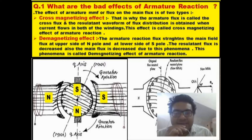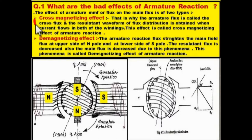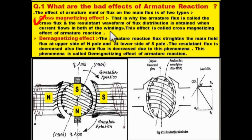The first major effect is the cross-magnetizing effect. What happens is the armature flux and field flux meet at a perpendicular position, at 90 degrees — they cross each other at 90 degrees. That is why the armature flux is called the cross flux, and the resultant waveform of flux distribution is obtained when current flows in both windings. This effect is called the cross-magnetizing effect of armature reaction.